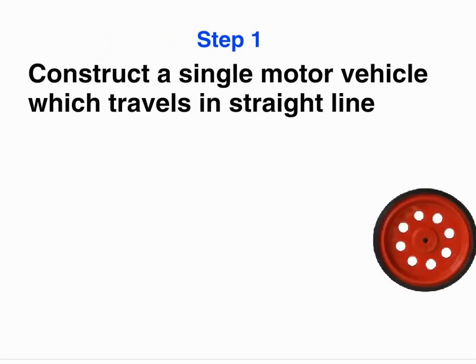For this we will have to construct a single motor vehicle which travels in a straight line. Why single motor? Because the single motor will drive two wheels on the same axle, and that means the vehicle will go in a straight line.